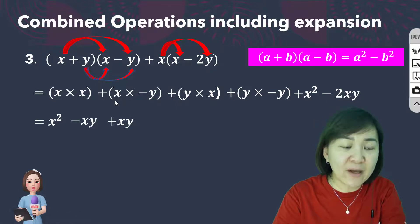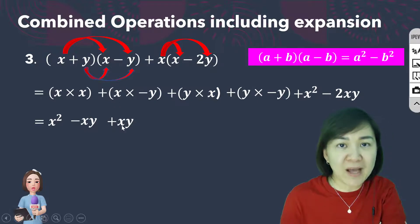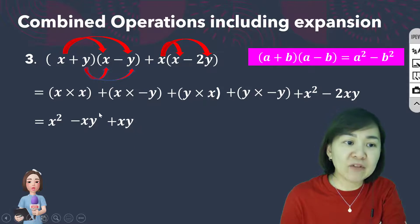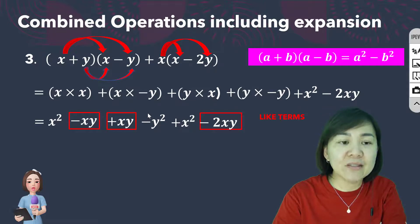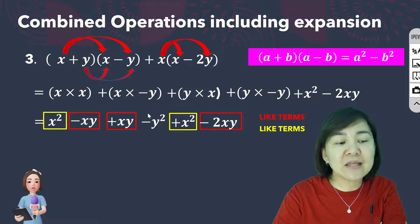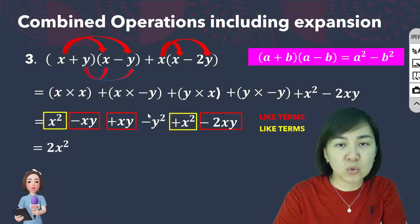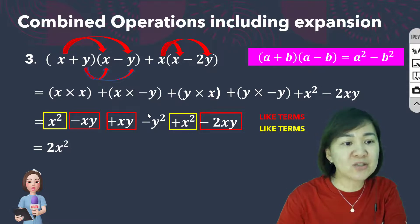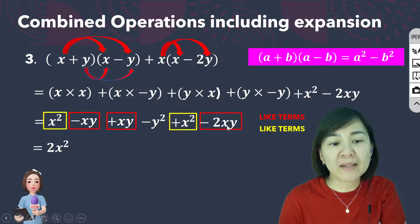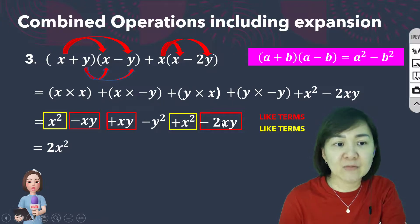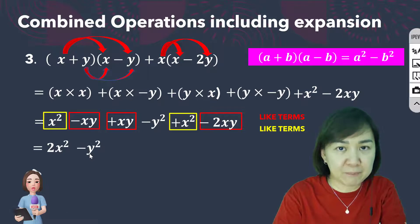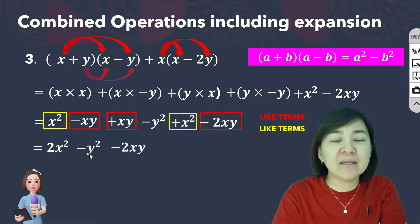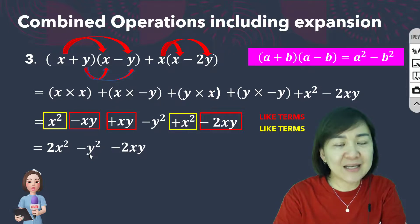So after the first bracket we get X squared minus Y squared, followed by X squared minus 2XY. Now find like terms: X squared and X squared are like terms giving 2X squared. Negative XY plus 2XY... wait, we get negative Y squared, and gathering all like terms: X squared plus X squared equals 2X squared, while the XY terms combine. Arranging by power, the final answer is 2X squared minus Y squared minus 2XY.